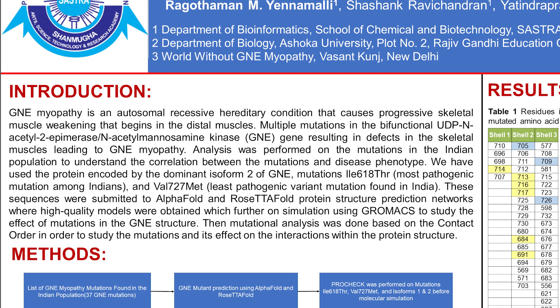This particular protein is a bifunctional UDP-N-acetyl-2 epimerase and N-acetylmannosamine kinase protein consisting of two domains. GNE myopathy results in defects in the skeletal muscles leading to muscular atrophy. Our objective was to analyze the previously reported data of isoform-2 variation of GNE — the wild type and two mutations, isoleucine-618 and valine-727-methionine — and their functional dynamics using molecular dynamics simulation.